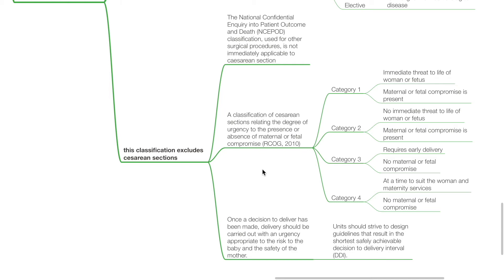A C-section is category 2 when there is no immediate threat to life of the woman or fetus, but maternal or fetal compromise is present. Category 3 is when the mother requires early delivery but there is no maternal or fetal compromise. Category 4 is performed at a time to suit the woman and maternity services with no maternal or fetal compromise. Once a decision to deliver has been made, delivery should be carried out with an urgency appropriate to the risk to the baby and the safety of the mother, with units striving for the shortest safely achievable decision-to-delivery interval.